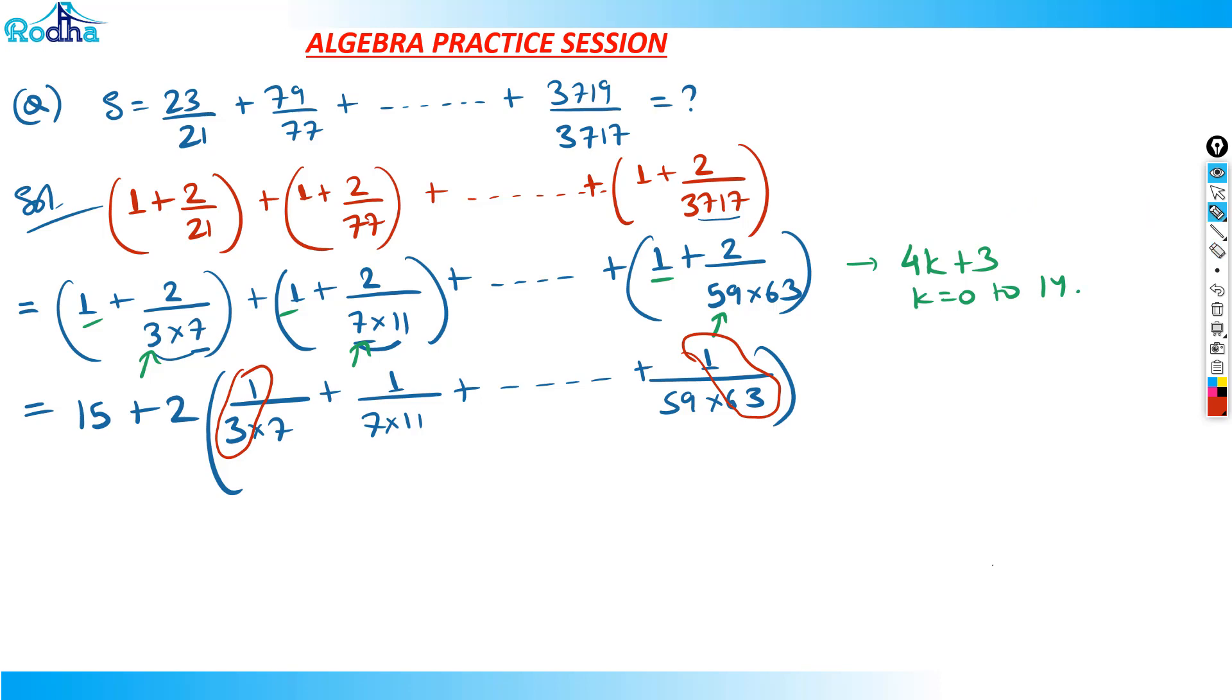If you don't have this idea, let me explain. For 1/(3×7), the difference is 4, so write 1/4 outside: 1/4(1/3 - 1/7). For 1/(7×11) with a gap of 4, it's 1/4(1/7 - 1/11).